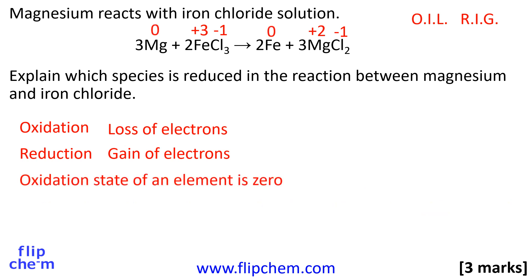When metals occur as elements, they are not made up of cations and anions — metallic bonds are present, not ionic bonds. The oxidation state of magnesium on its own is zero, and the oxidation state of iron on its own is zero. In fact, the oxidation state of any element is always zero.